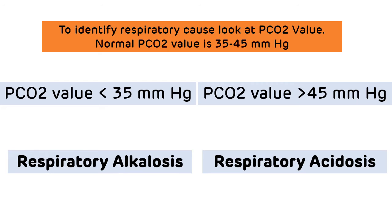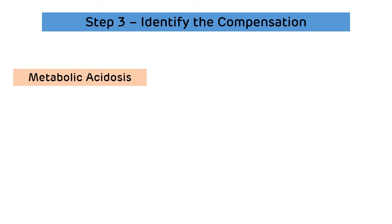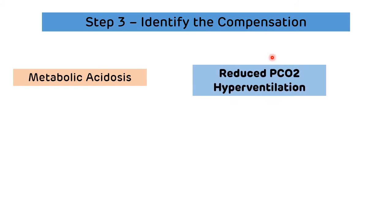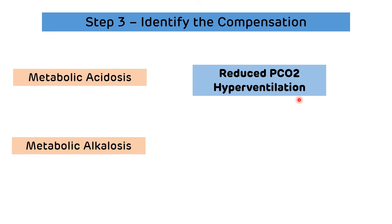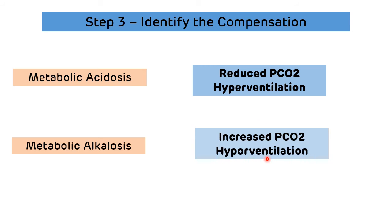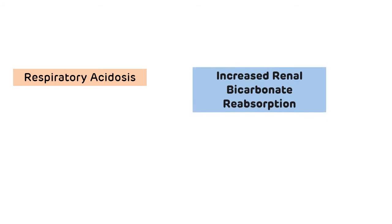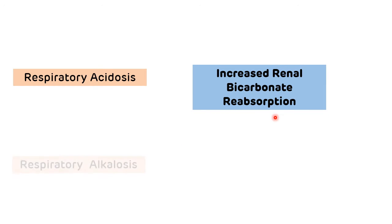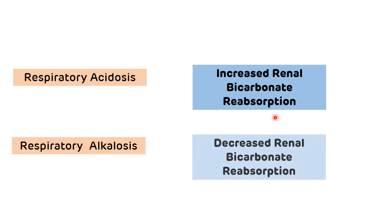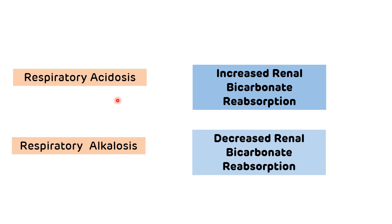Step three: identify the compensatory mechanism. In metabolic acidosis, compensation occurs via decreased PCO2 through hyperventilation. In metabolic alkalosis, compensation occurs via increased PCO2 through hypoventilation. Remember: in metabolic acidosis and alkalosis, compensation is respiratory. In respiratory acidosis, compensation occurs via increased renal bicarbonate reabsorption. In respiratory alkalosis, compensation occurs via decreased renal bicarbonate reabsorption. In respiratory disorders, compensation is renal.